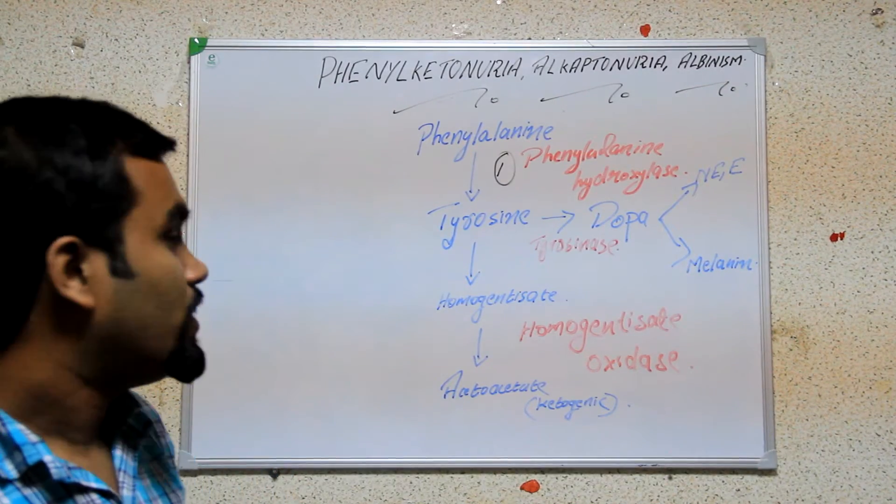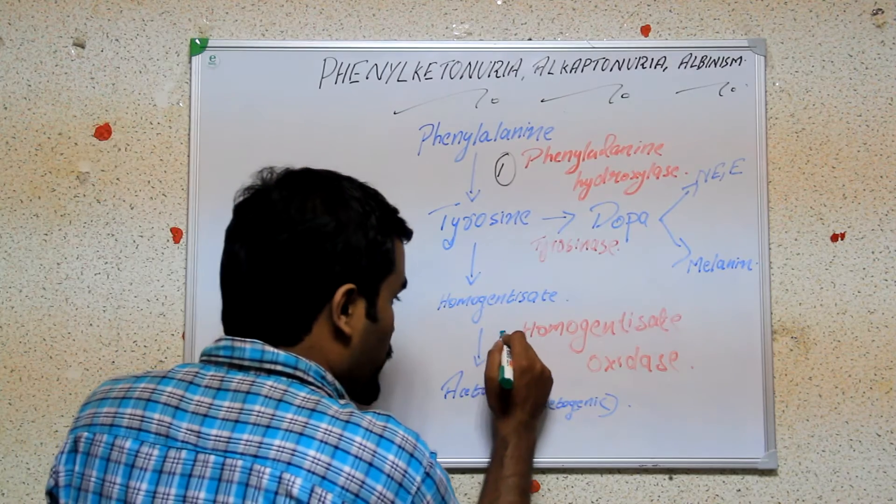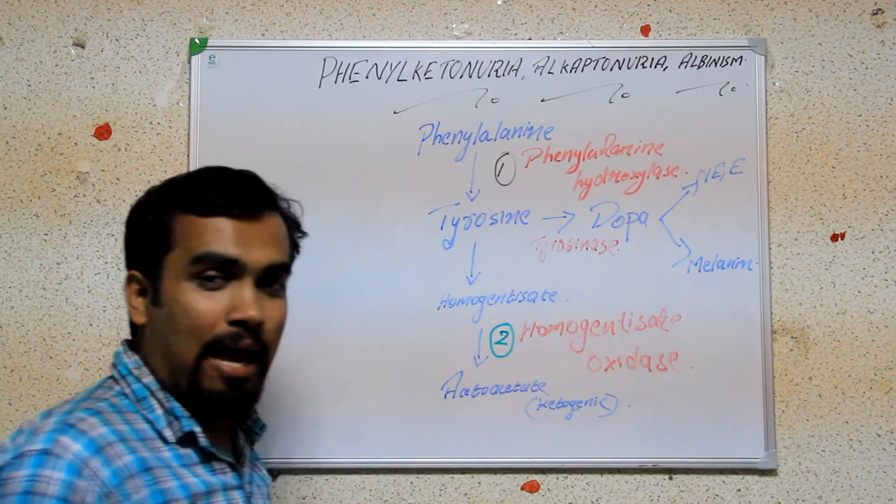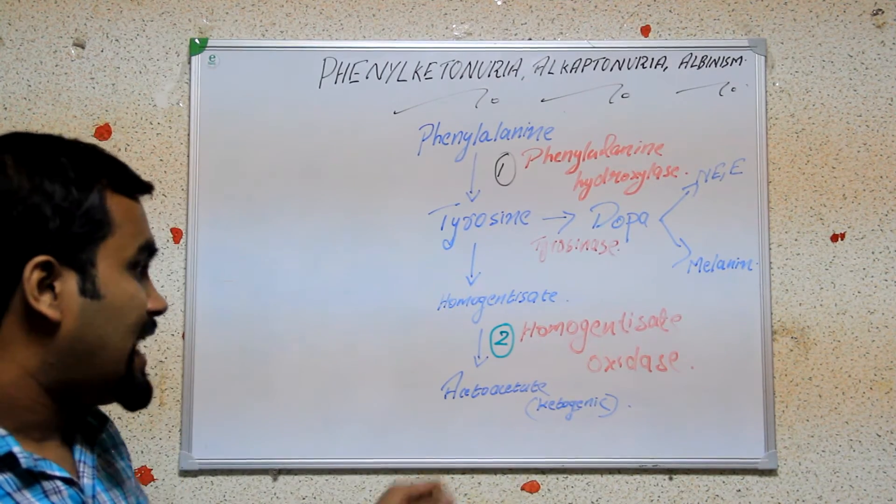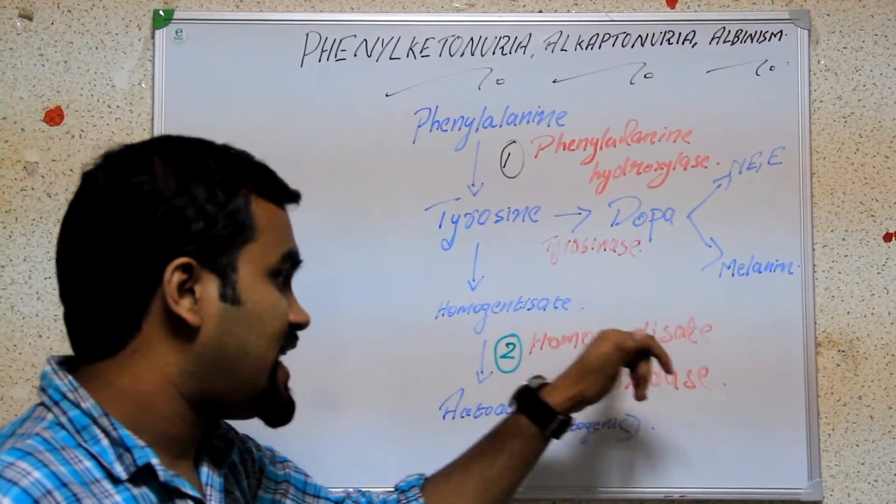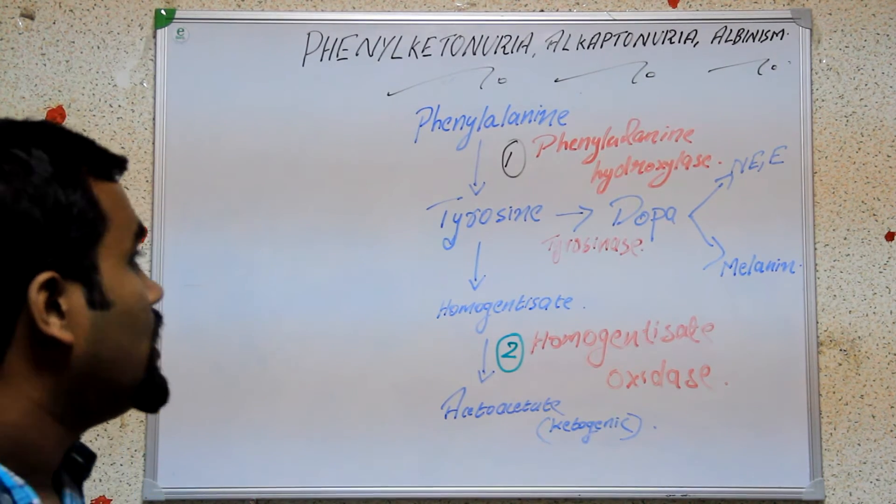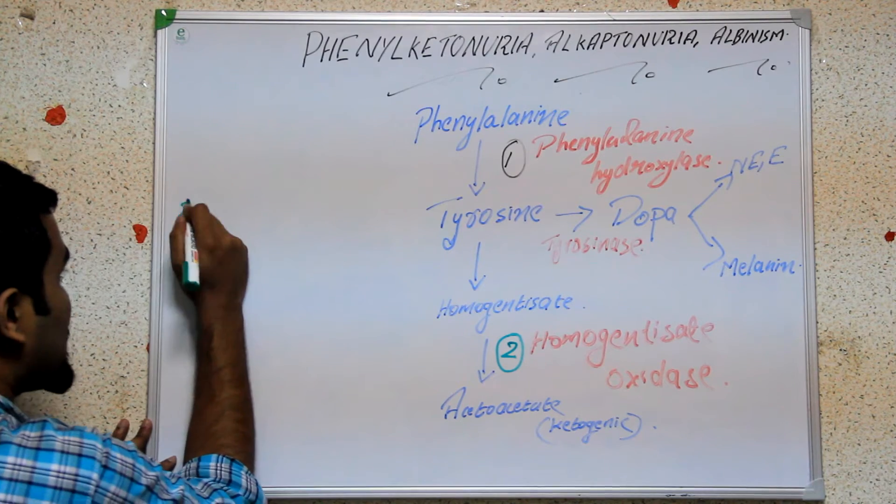Let's continue. Now we will move to the next disease known as alcaptonuria. What happens in alcaptonuria? The enzyme homogenesate is converting to acetoacetate. If this homogenesate oxidase enzyme is deficient or completely absent, we will have the disease known as alcaptonuria.